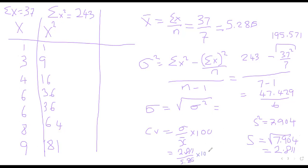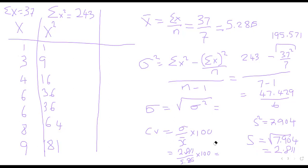So: 2.811 divided by 5.286 times 100 gives approximately 53.18% — that is our coefficient of variation. Let me quickly recap what we did: we summed x to get 37, summed x squared to get 243, found the mean as 5.286.